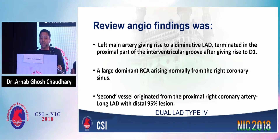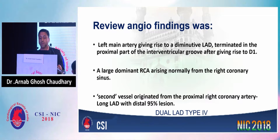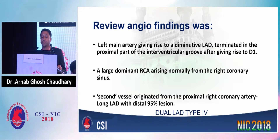The final review angiography findings were: left main artery giving rise to a diminutive LAD, terminating in the proximal part of the interventricular groove after giving rise to D1. A large dominant RCA arising normally from the right coronary sinus, and the second vessel originating from the proximal RCA was a long LAD with a distal 95% lesion — a dual LAD type 4.